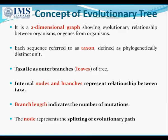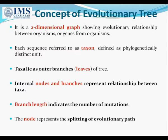Phylogenetics Part 2: The Concept of Evolutionary Tree. An evolutionary tree is a two-dimensional graph which shows us the evolutionary relationship between organisms or genes from different organisms. Each sequence is referred to as a taxa and is defined as a phylogenetically distinct unit. These taxa lie as outer branches, i.e., leaves of a tree, while the internal nodes and branches represent relationships between taxa.